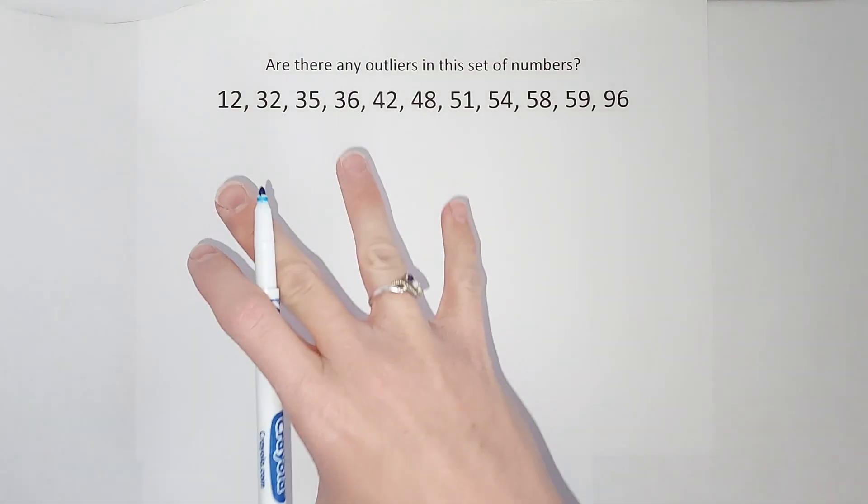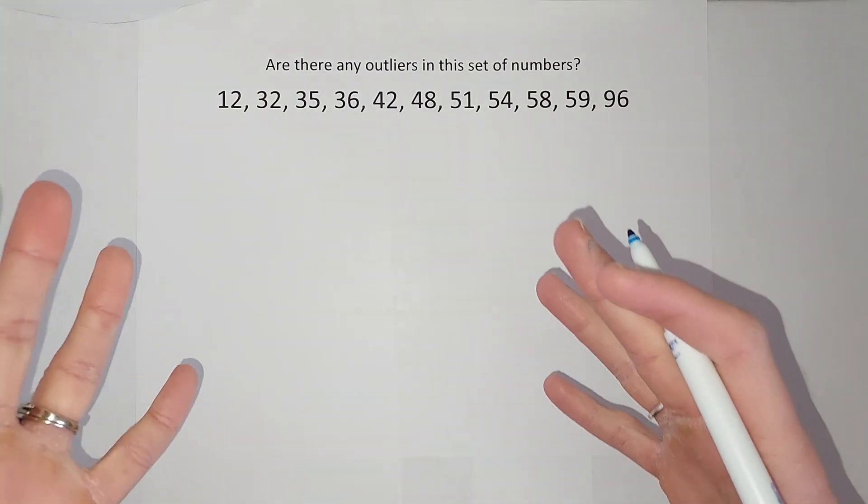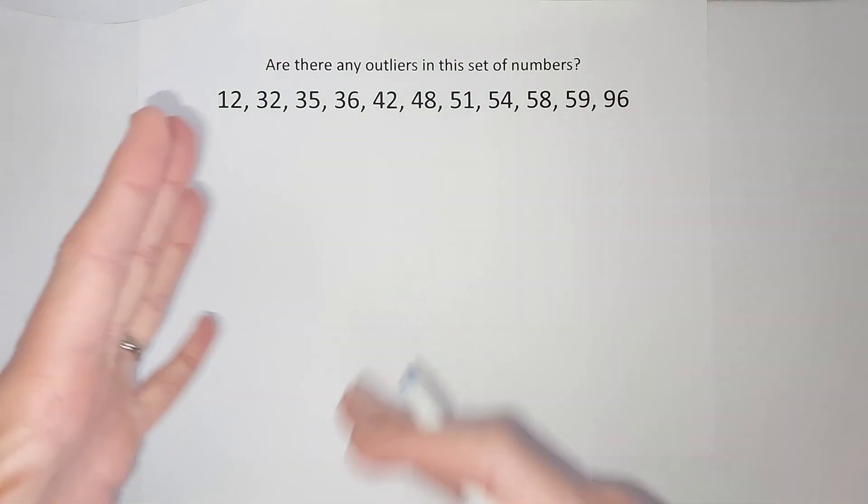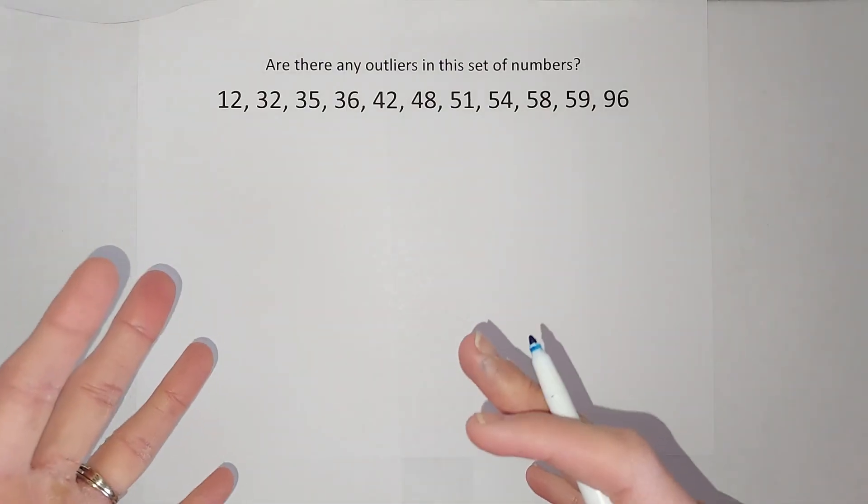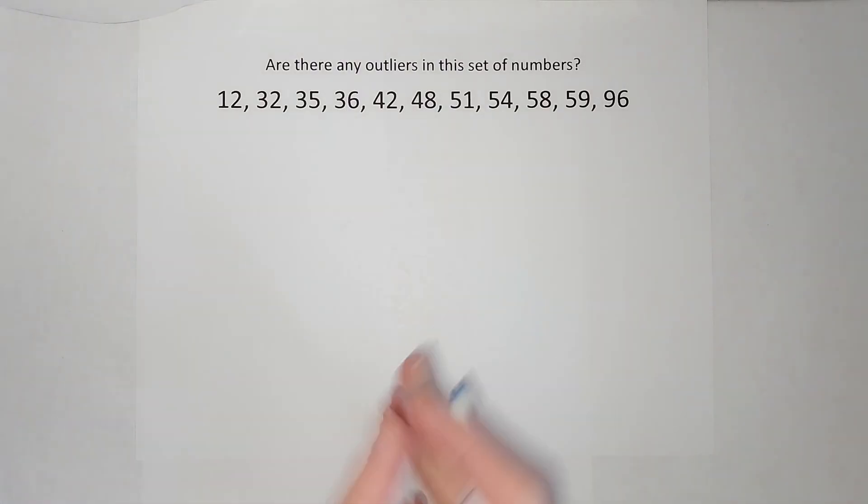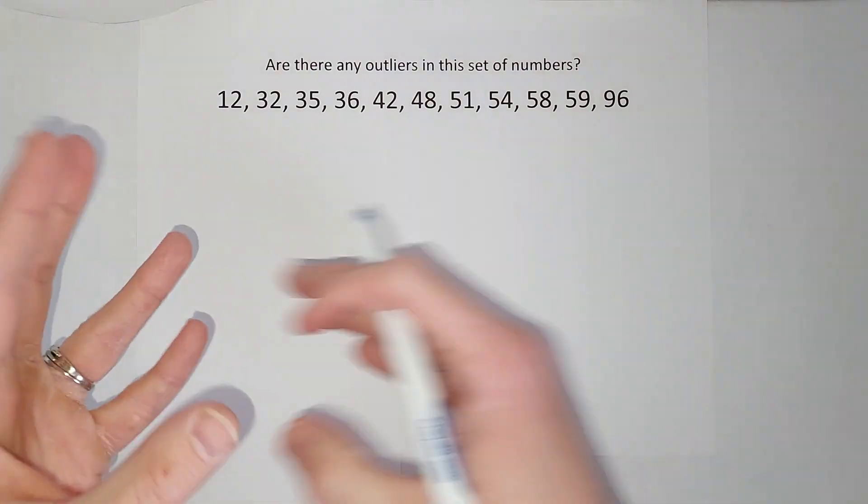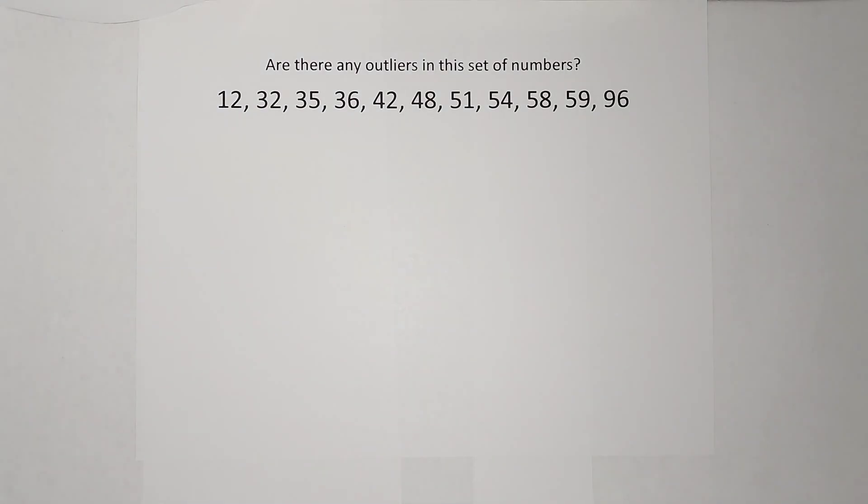So outliers are numbers that are so far away from the other pieces of data that if we just plot it normally, it's going to make our data look skewed. So we still want to represent it, but we want to kind of show, okay, this number's here, but it's so far away. We're going to look at it a little bit differently. Okay, so we needed a way to be able to identify these.